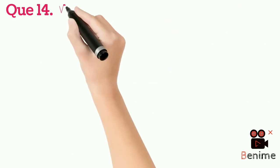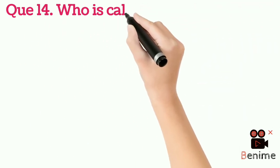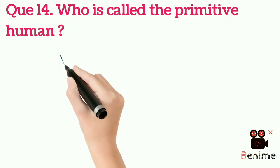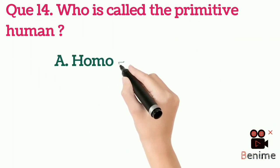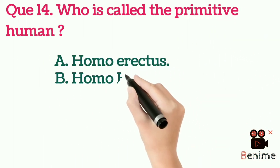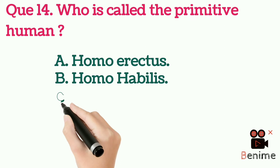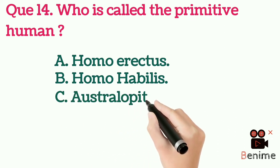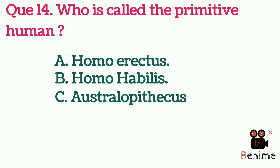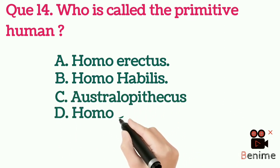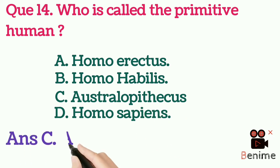Question 14: Who is called the primitive human? A. Homo erectus. B. Homo habilis. C. Australopithecus. D. Homo sapiens. Answer C: Australopithecus.